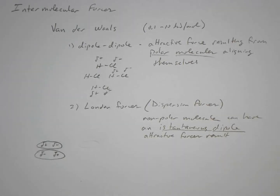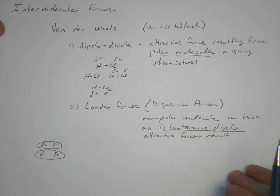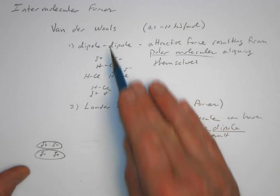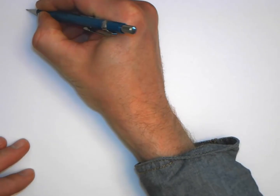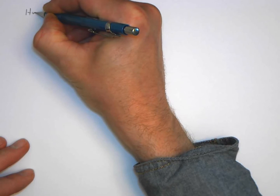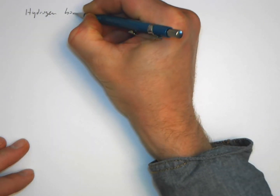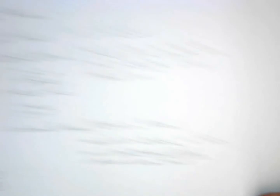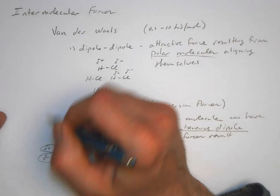Now let's look at the next type of intermolecular force: hydrogen bonding. So far we've looked at van der Waals forces and two different types of van der Waals forces. Hydrogen bonding is another sort. Remember, we're talking about intermolecular forces — forces that are between molecules.